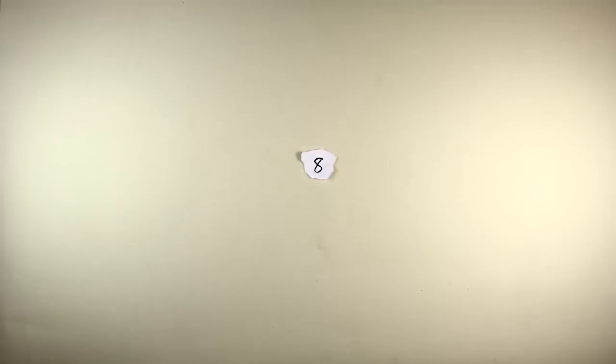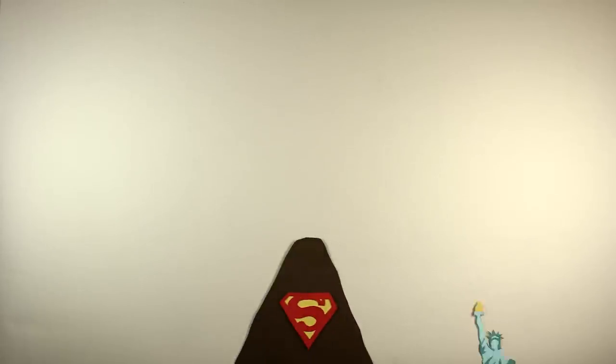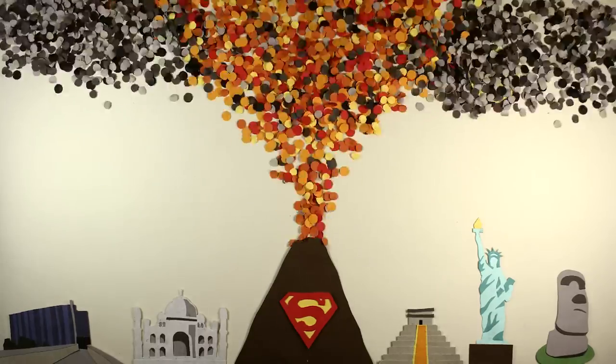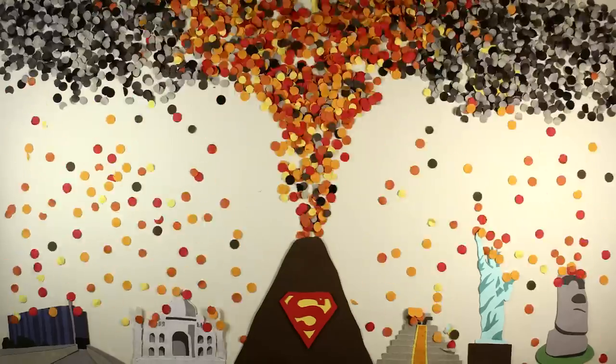A figure of 8 on the Explosivity Index is reserved for supervolcanoes, like under Yellowstone National Park. These would spread ash and rock across the planet, blocking out the sun over huge areas, with near-apocalyptic consequences.